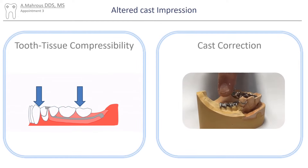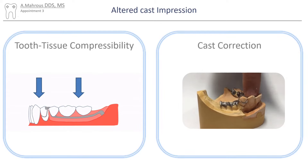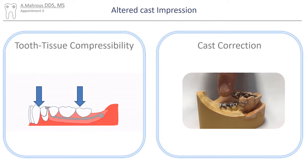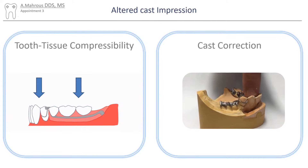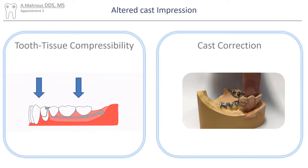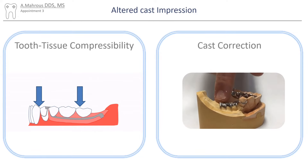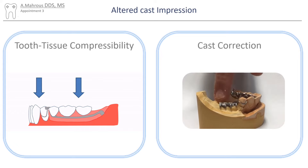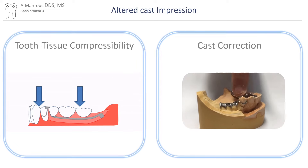The altered cast technique is not used in every case. It was originally developed in order to equalize differences in tooth tissue compressibility. However, it is often used to correct an inaccurate distal extension cast.